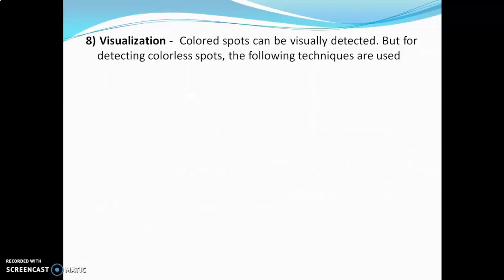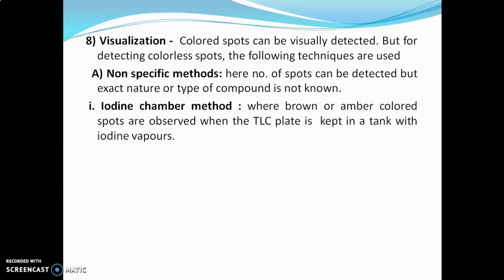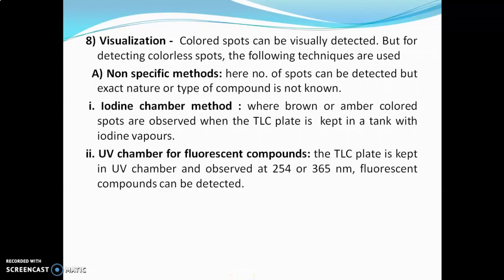The next step is visualization of spots. Colored spots can be directly visualized, but colorless spots require special techniques. The first is the nonspecific method, where the number of spots can be detected but the exact nature and type of compound is not known. In the iodine chamber method, the TLC plate is kept in a tank with iodine vapors after development and drying; iodine adds to unsaturation points and brown spots develop. Another nonspecific method is the UV chamber, where the plate is observed at 254 nm or 365 nm; fluorescent compounds will fluoresce and get detected.